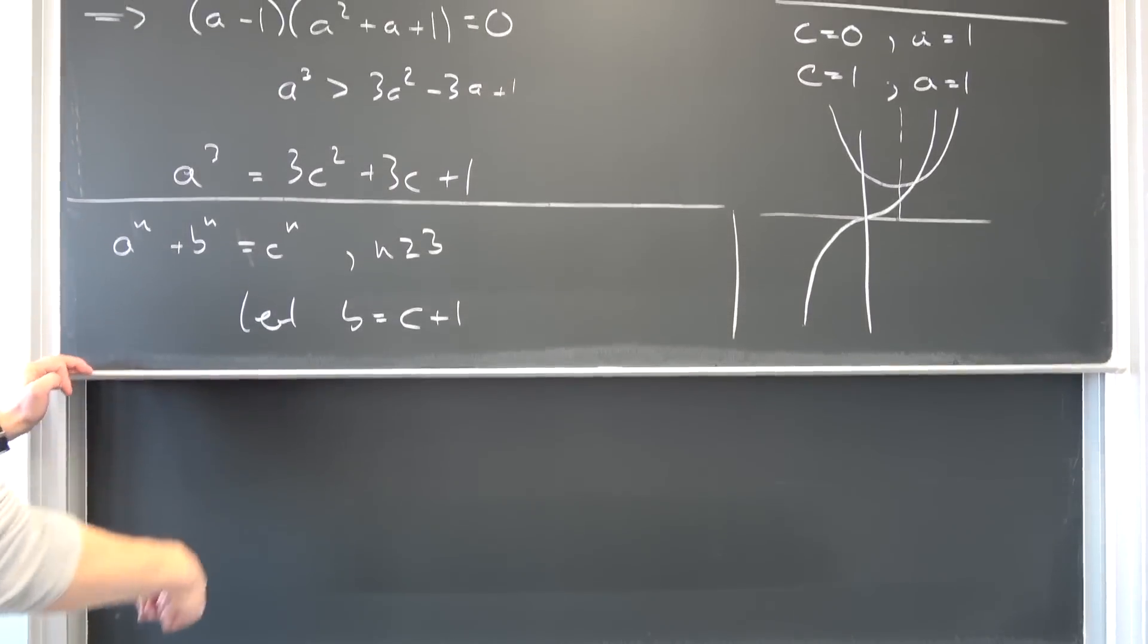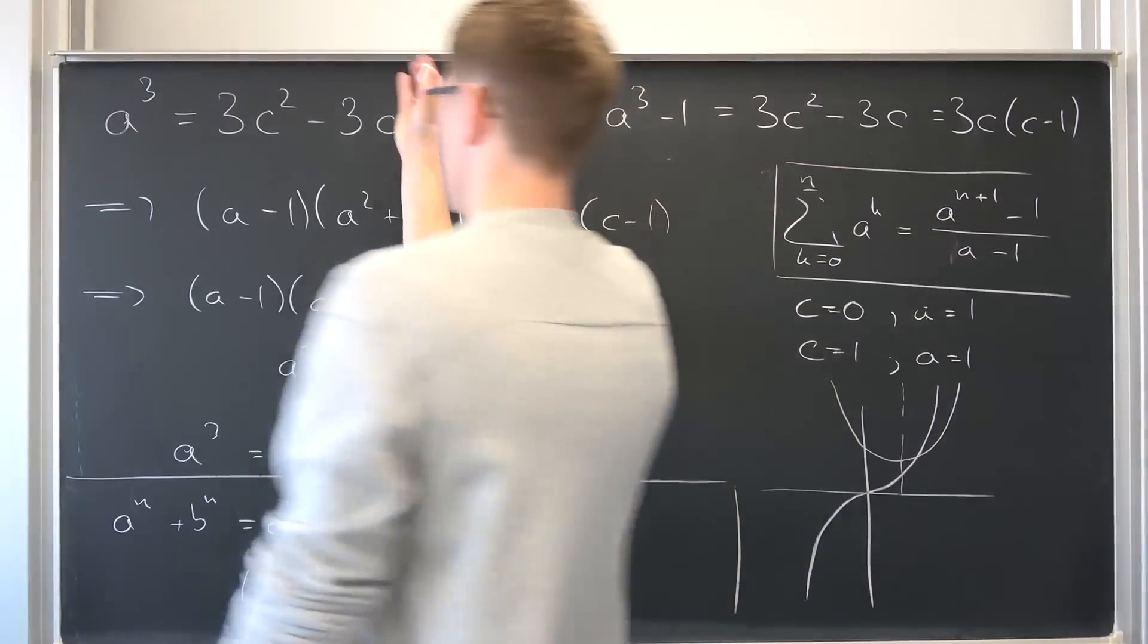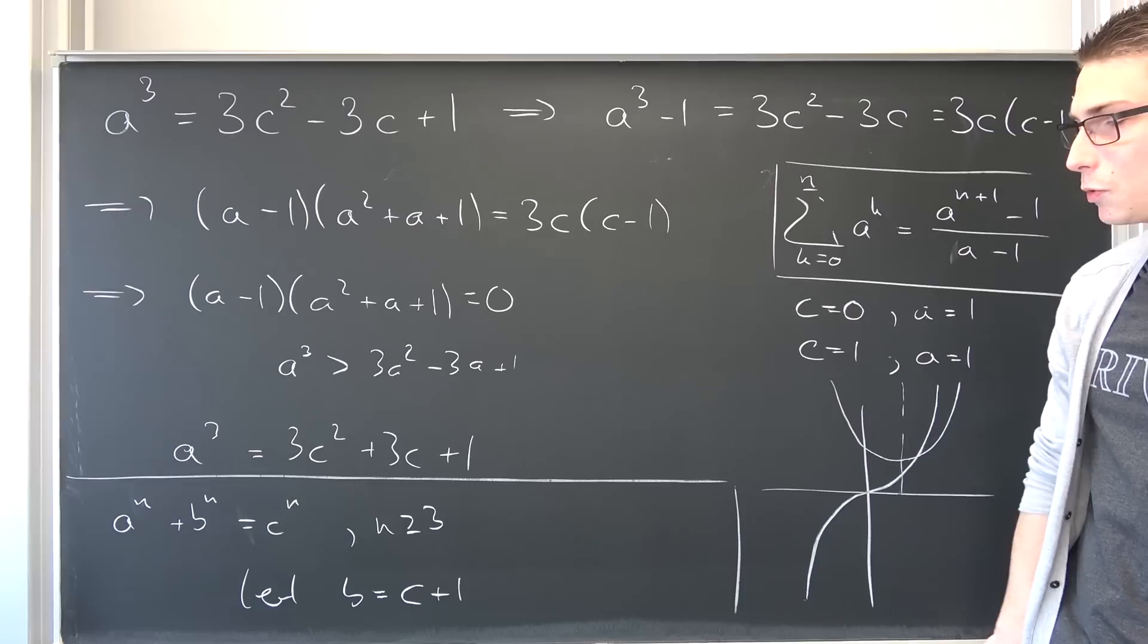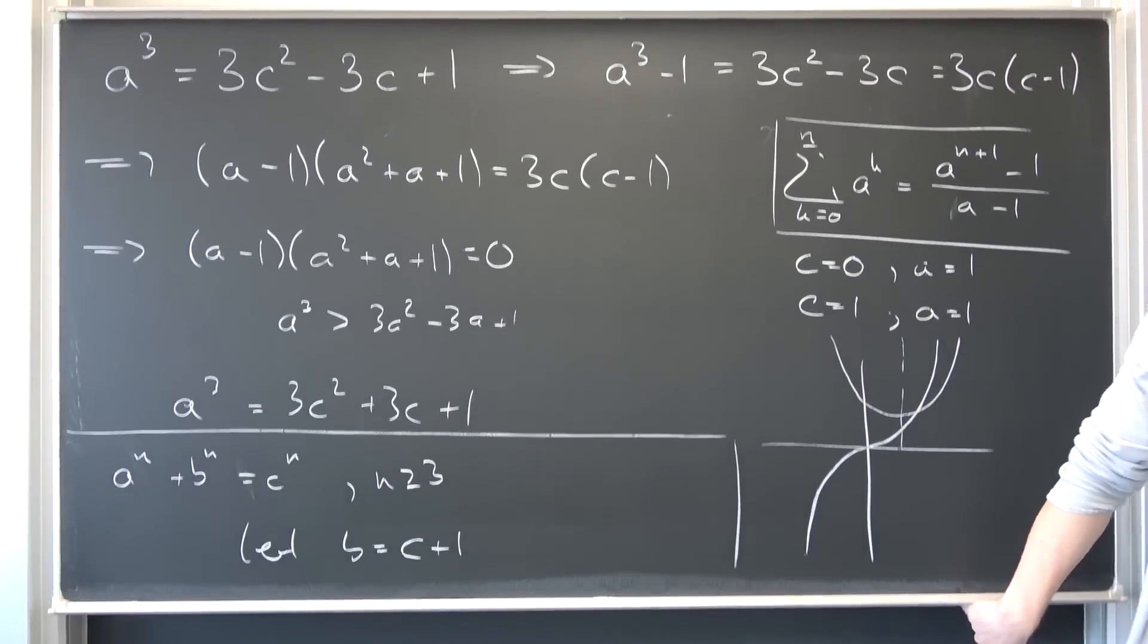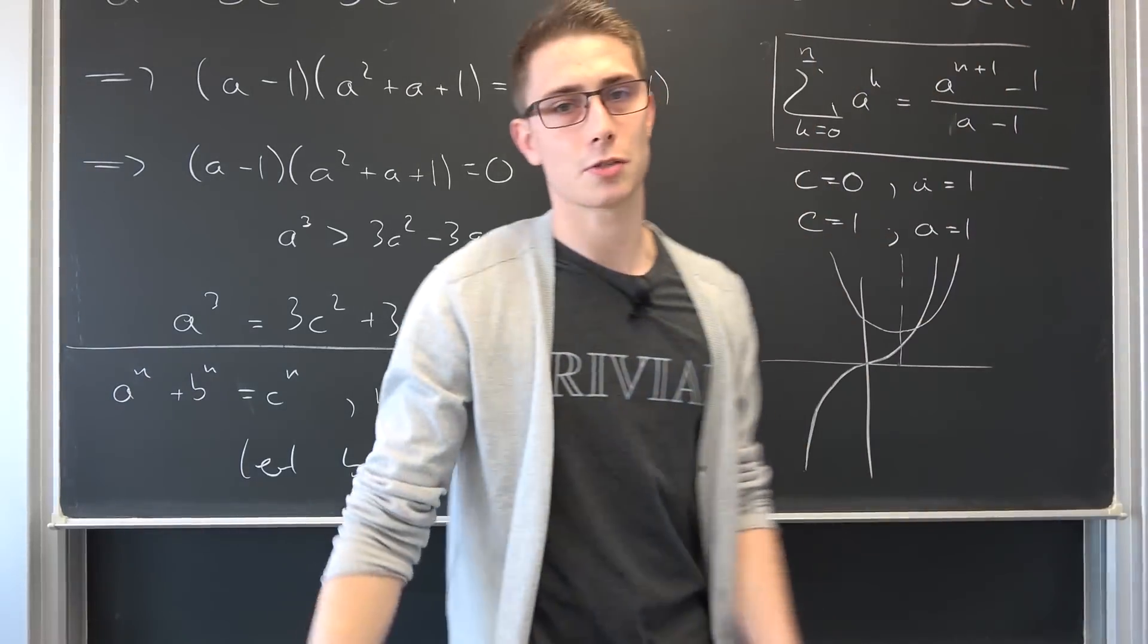It should be then if you plug all of those in and when n is equal to 3 you are going to arrive with this exact Diophantine equation and you see there are no solutions except for the trivial ones which are right here. It's just what it is.